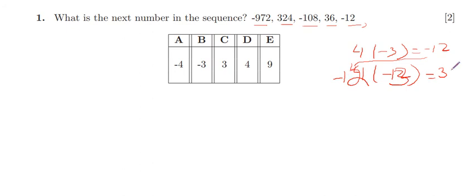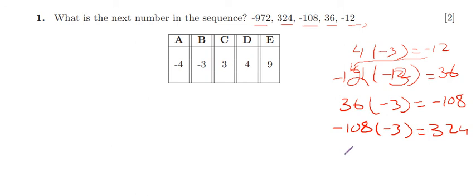So -12 times -3, we get 36. And we multiply 36 with -3, we get -108. Similarly, -108 multiplied by -3, we get 324. And 324 multiplied with -3, we get -972.